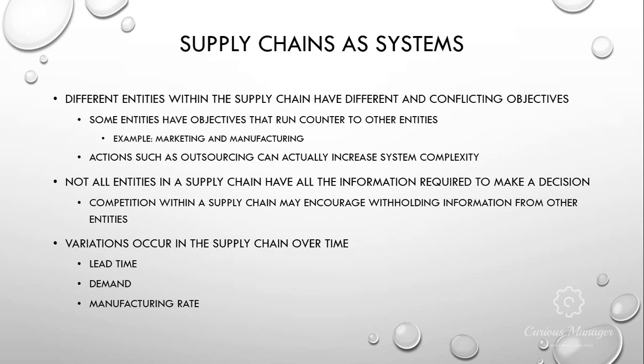Different entities within the supply chain have different and conflicting objectives. Marketing's goal is to sell as much as possible — for example, landing an order for 1,000 items when manufacturing can only make 200 a month creates enormous stress throughout the supply chain, rippling through distribution as well. Instead of letting this happen, a strategy called demand smoothing — from lean and theory of constraints — can be used to smooth demand and reduce the impact to manufacturing and the supply chain as a whole. I'll cover that in later weeks.